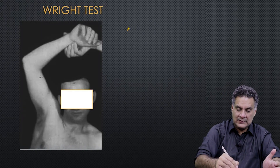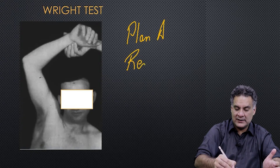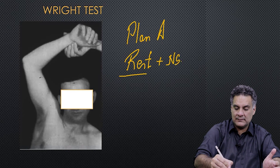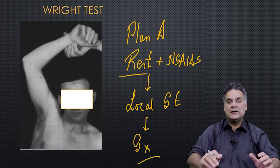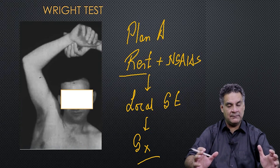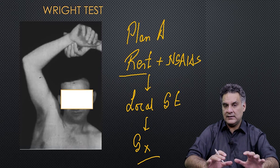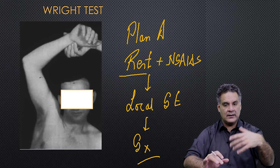Whenever we have compression neuropathies, their treatment follows what I call 'Plan A': do not do the provocative things, give rest, and give anti-inflammatories. If no relief, give local steroids. If no relief still, then surgery. This 'Plan A' is not a standard textbook name, but this framework — conservative trial, then local steroid (not oral), then surgery — can be used at multiple places.